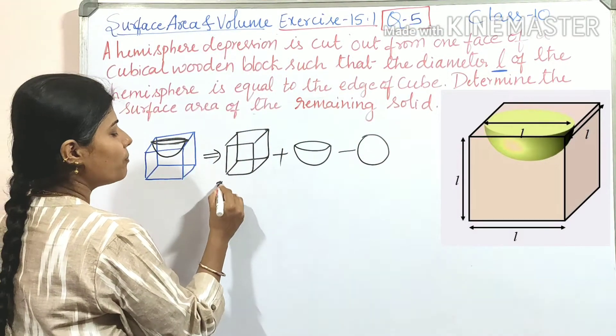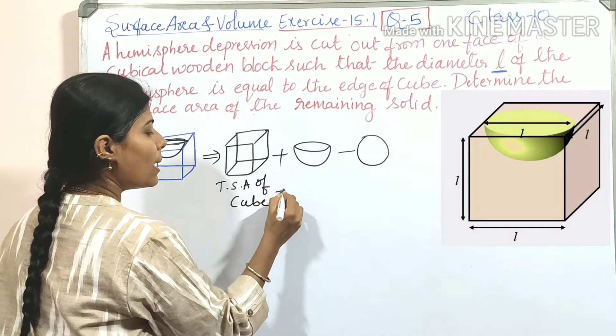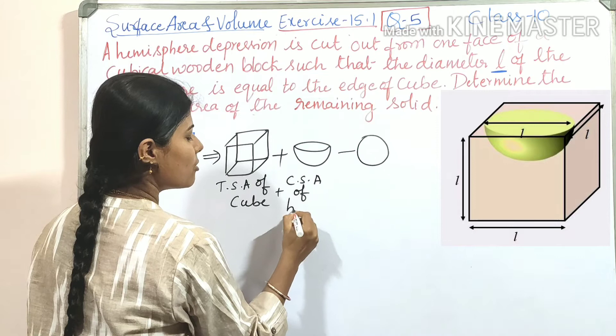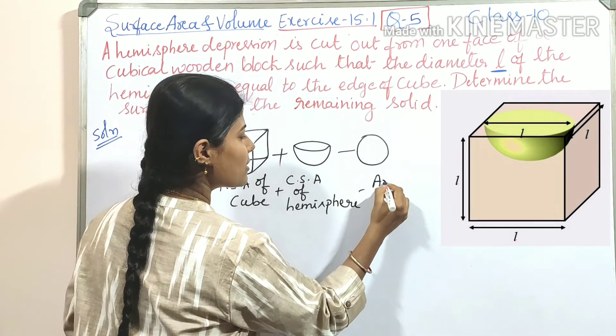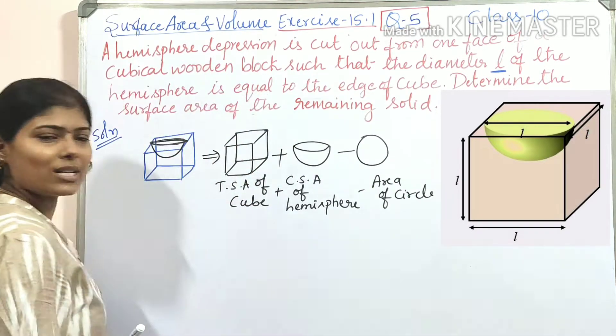So if we write the formula. TSA of cube plus CSA of hemisphere minus area of circle.